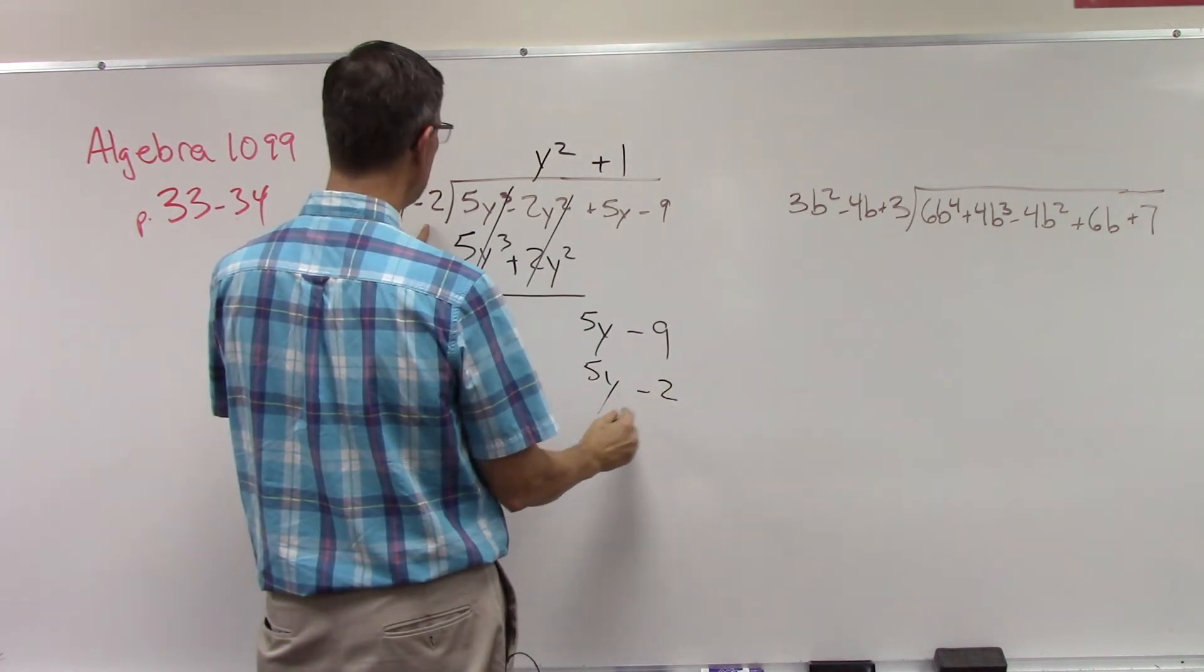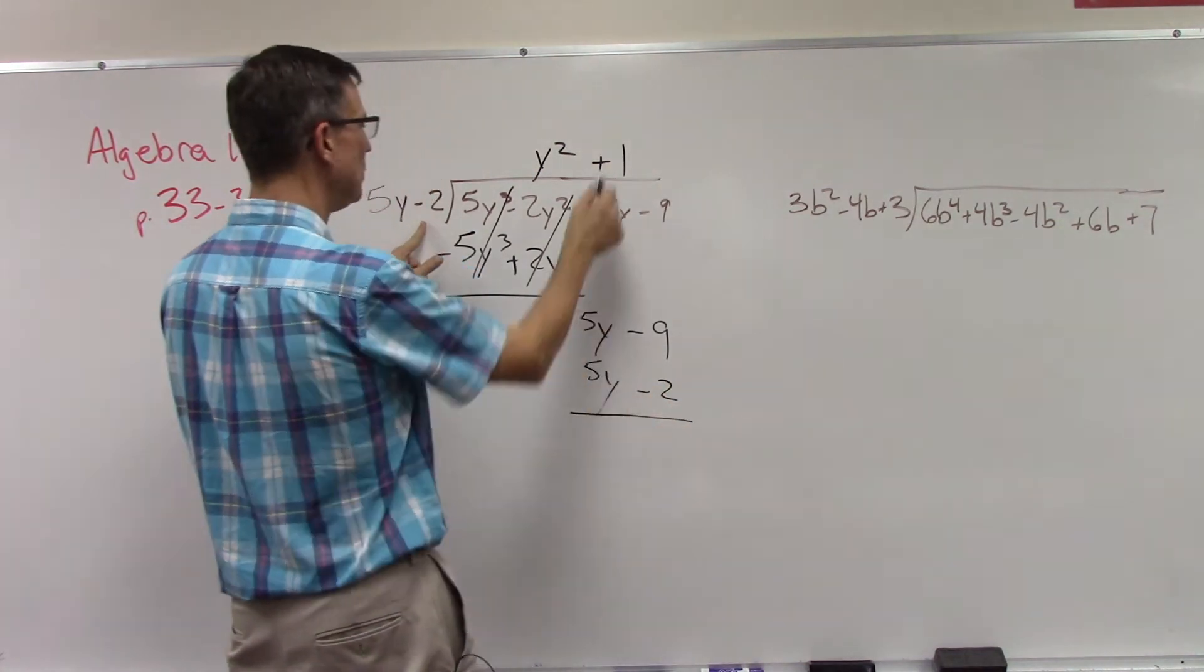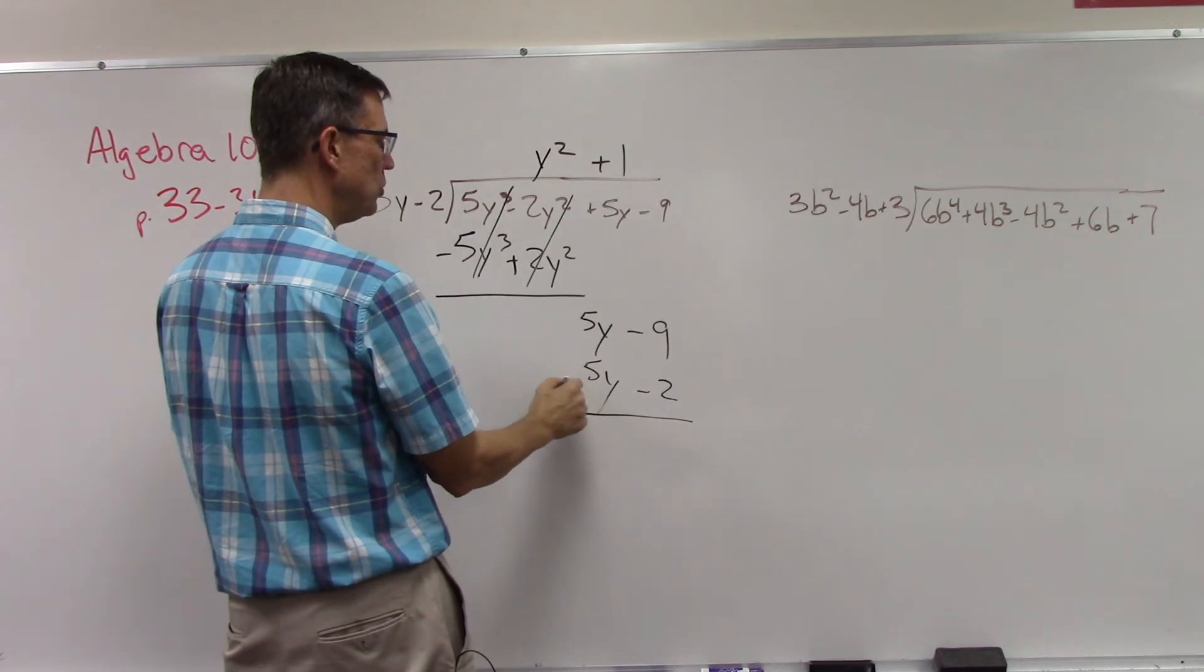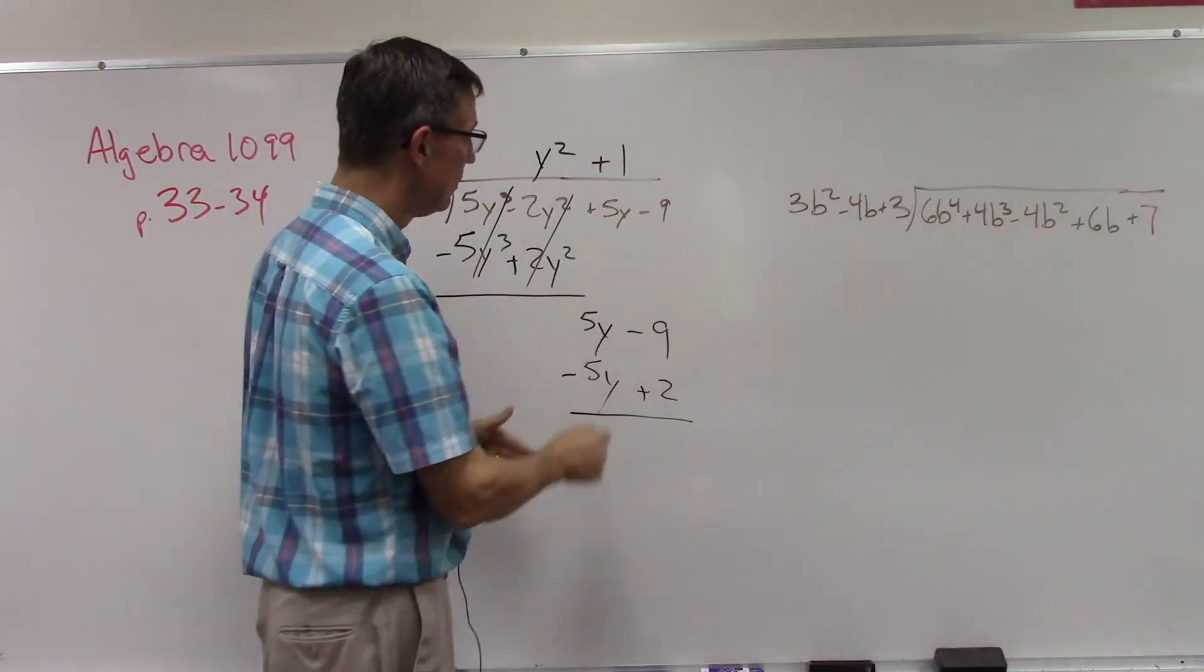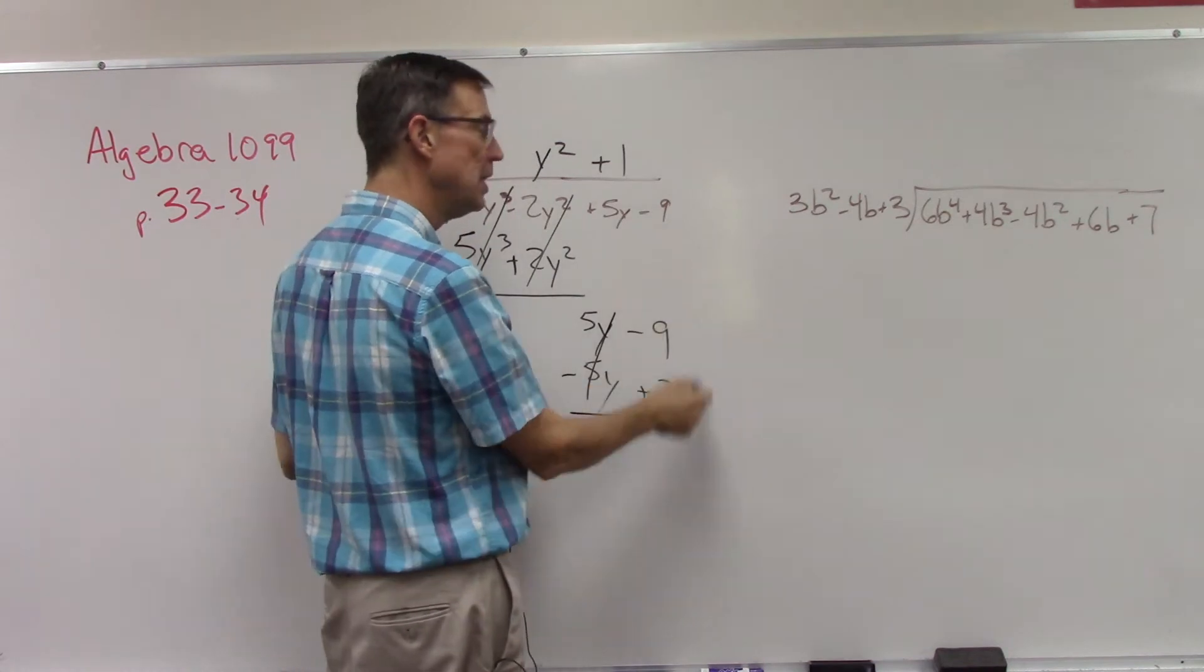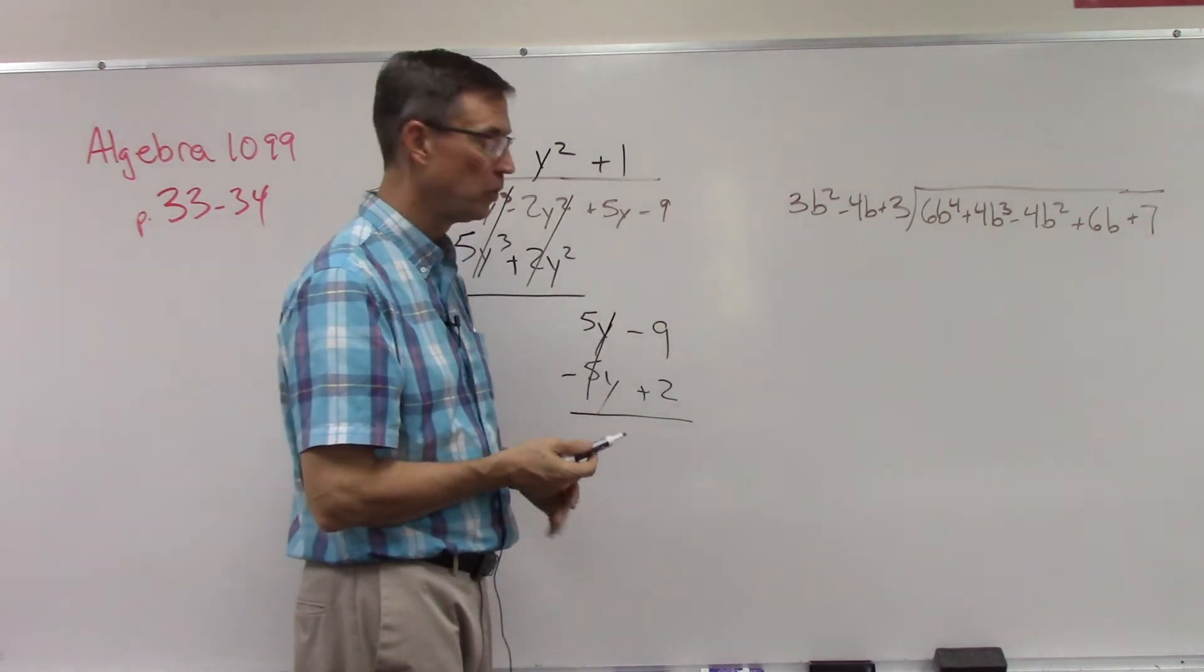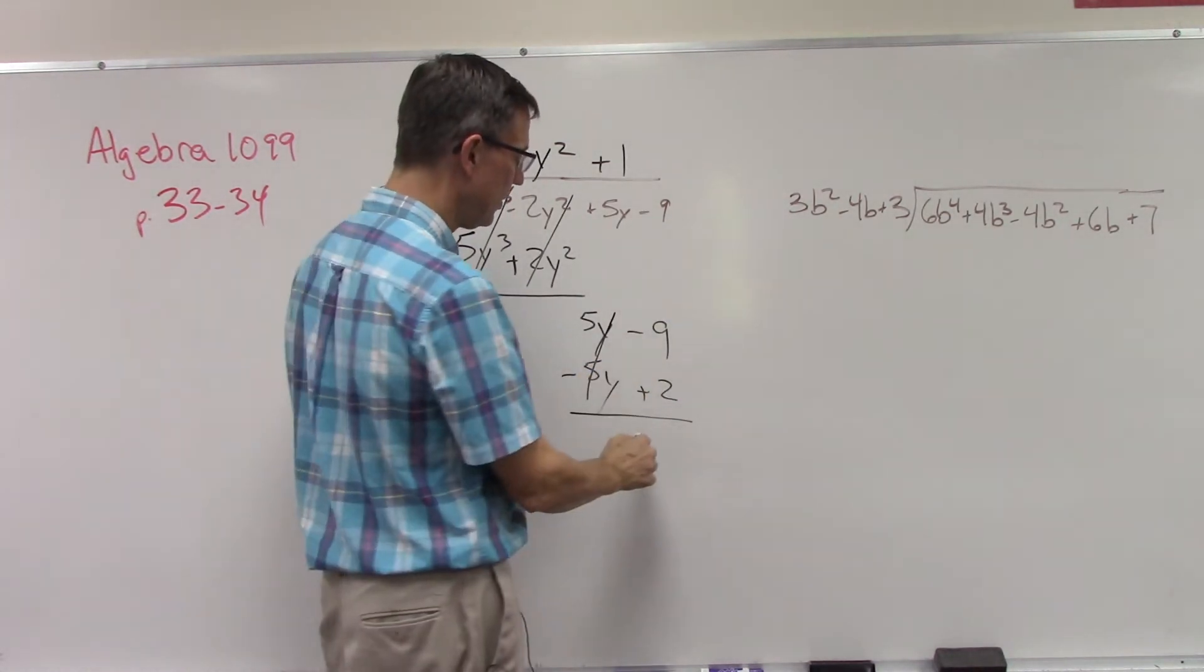Now watch what happens here. When I multiply the 1 times negative 2, get negative 2. Change these to their opposites when we're going to add. This cancels, but this does not cancel. Okay, so we end up with a remainder of negative 7.